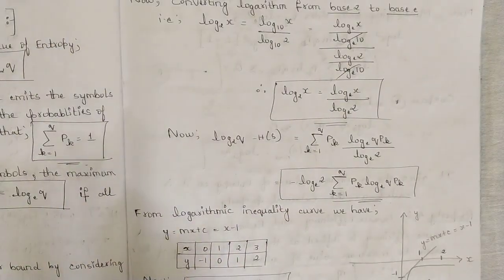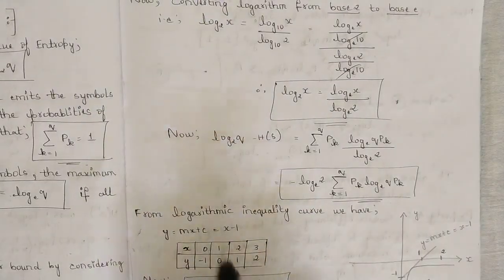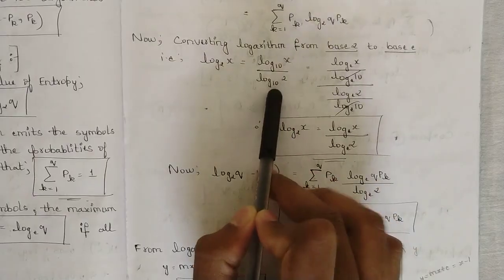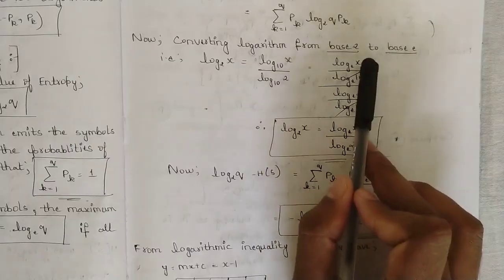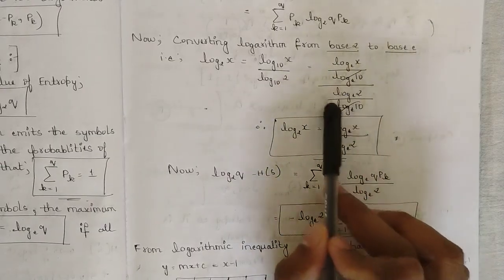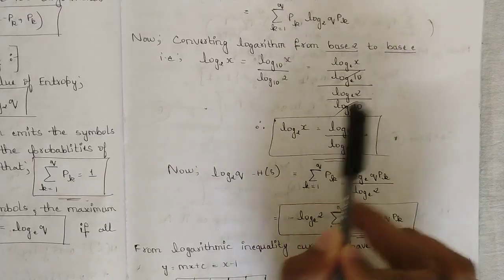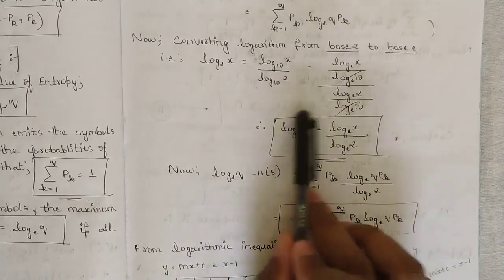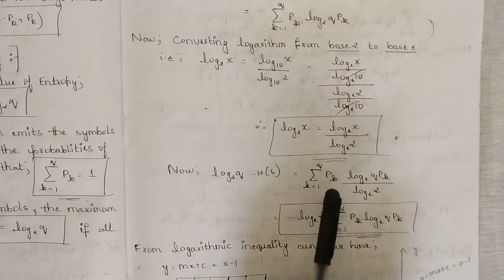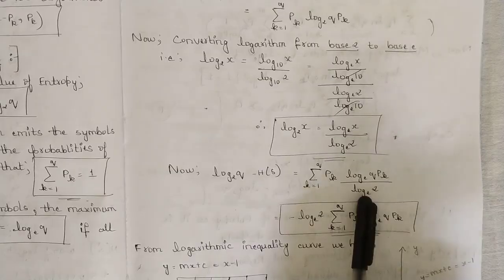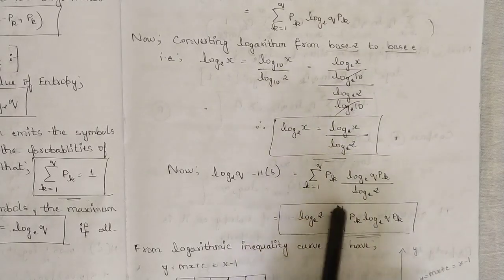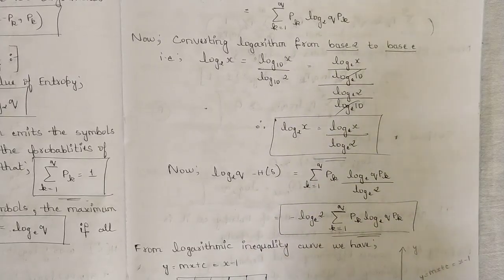Now convert the logarithm from base 2 to base E. The conversion is: log X base 2 equals log X base 10 divided by log 2 base 10, which simplifies to log X base E divided by log 2 base E. Substituting, log Q base 2 minus H(S) equals summation K=1 to Q of P(K) times ln(Q·P(K)) divided by log 2 base E. Bringing the denominator to the numerator as a negative term gives: minus log 2 base E times summation K=1 to Q P(K) ln(Q·P(K)).